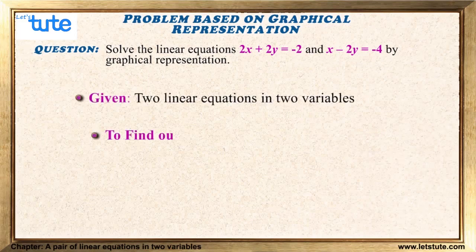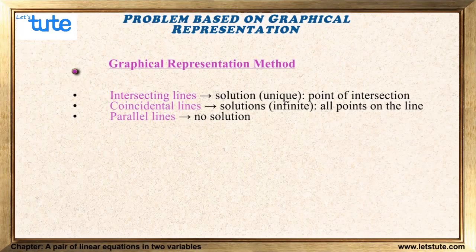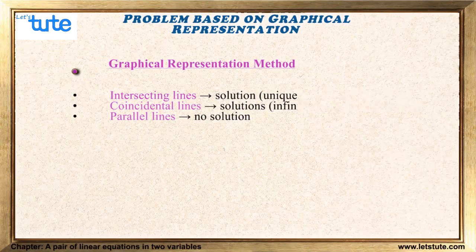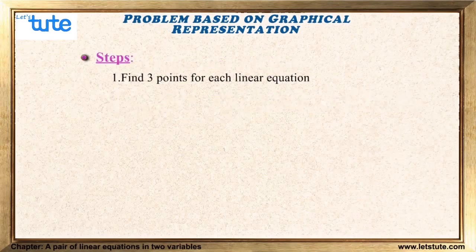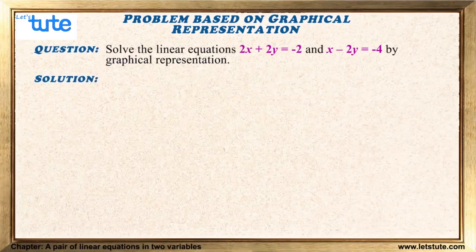By graphical representation, we mean we have to plot the lines and find out the solution. To solve linear equations by graphical representation, we need to: first, find out three points on each line; second, plot the points on graph paper and draw two straight lines; and third, observe the lines drawn and find out the solution.